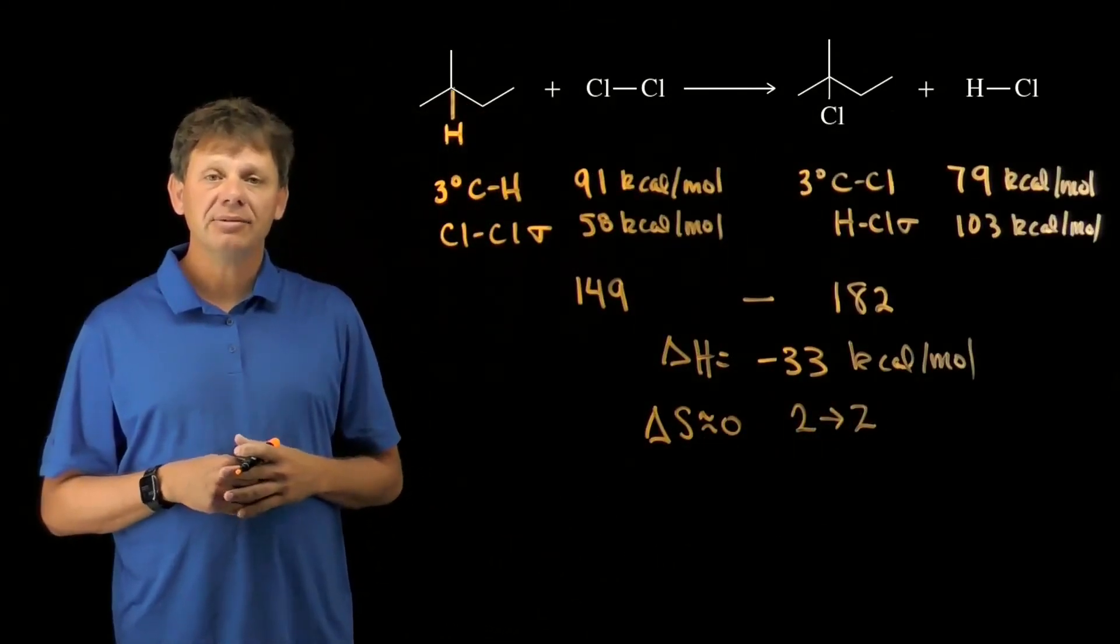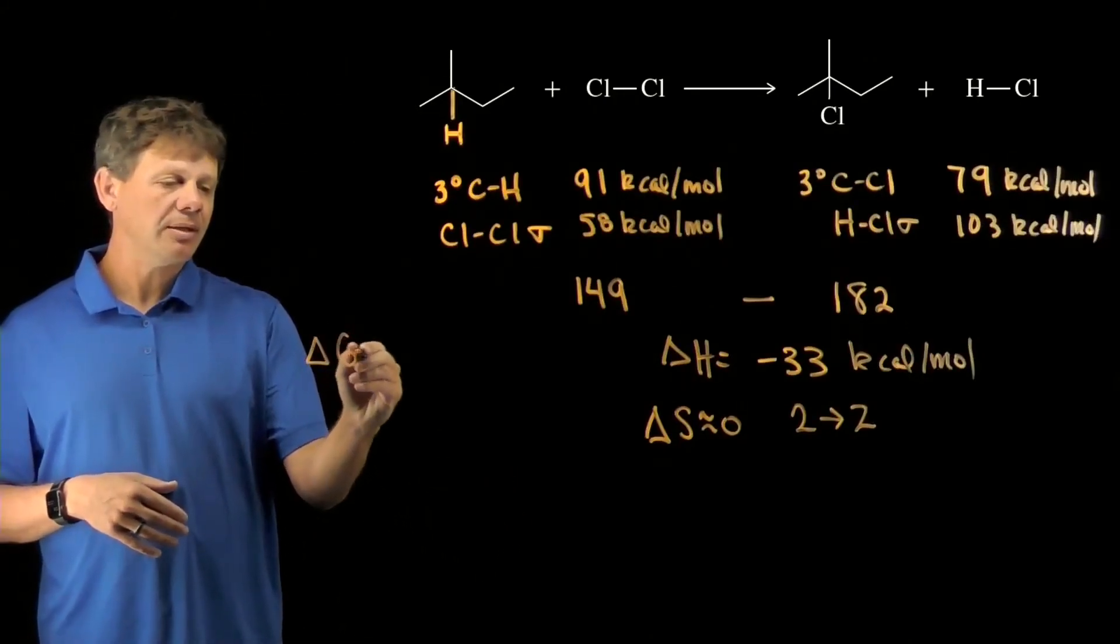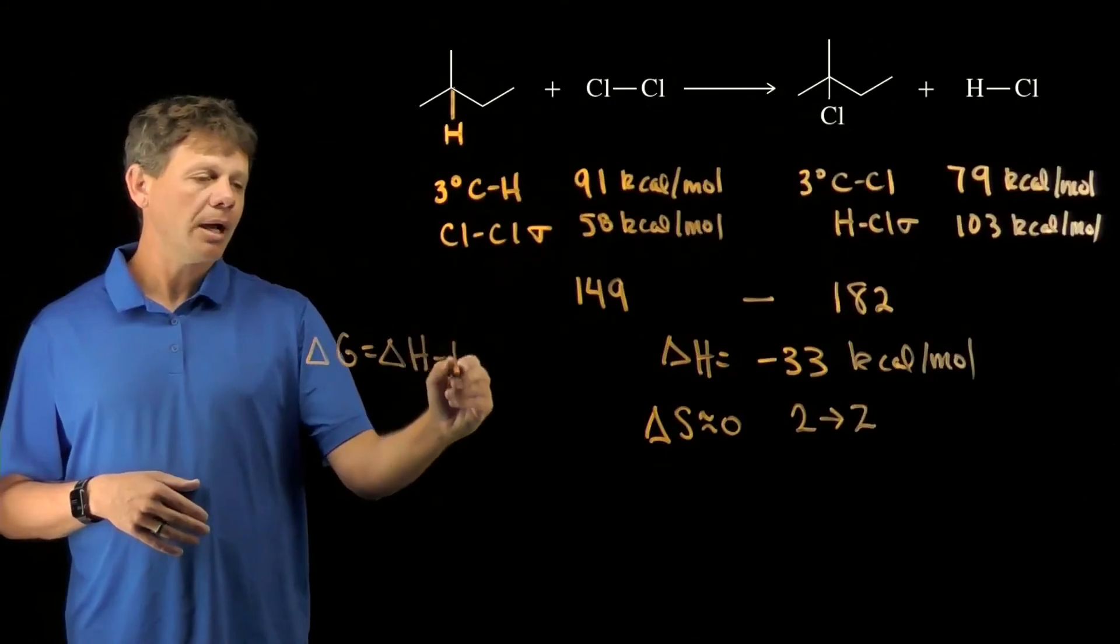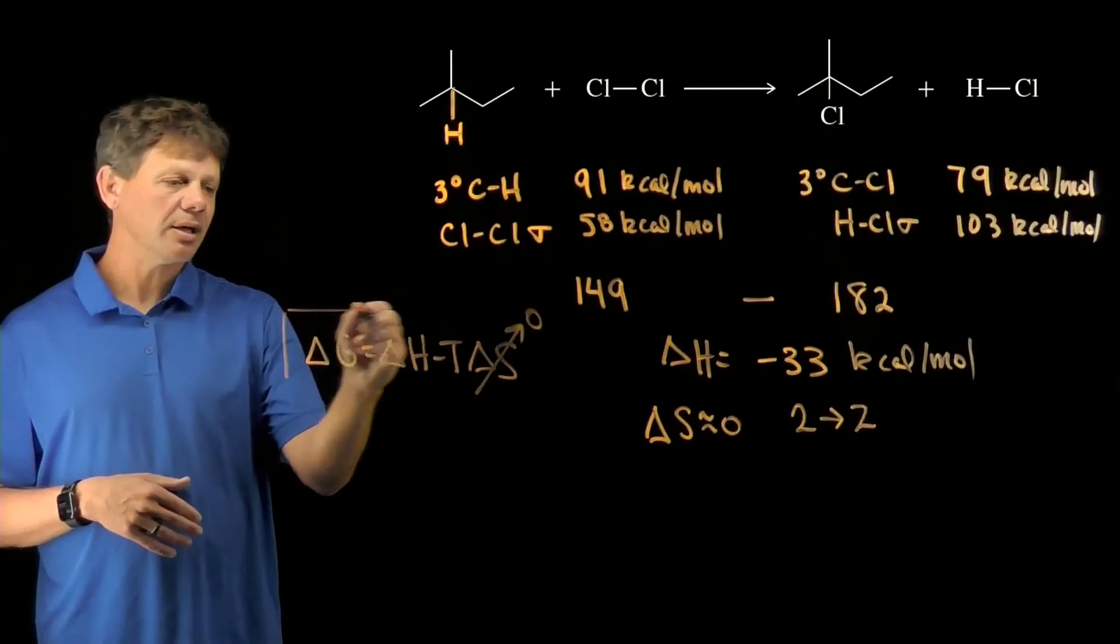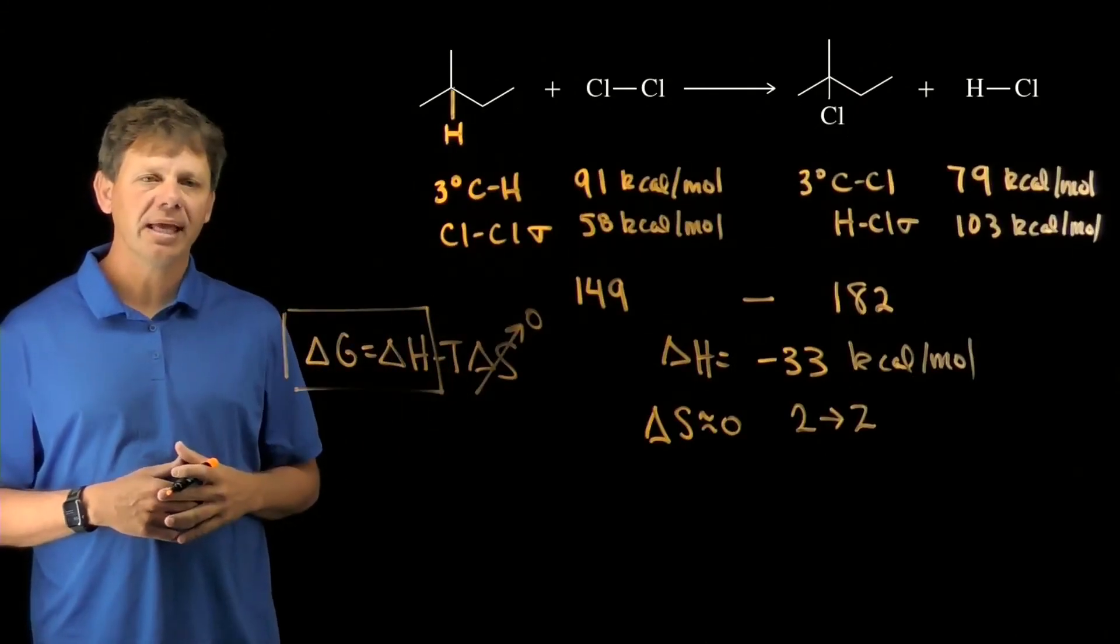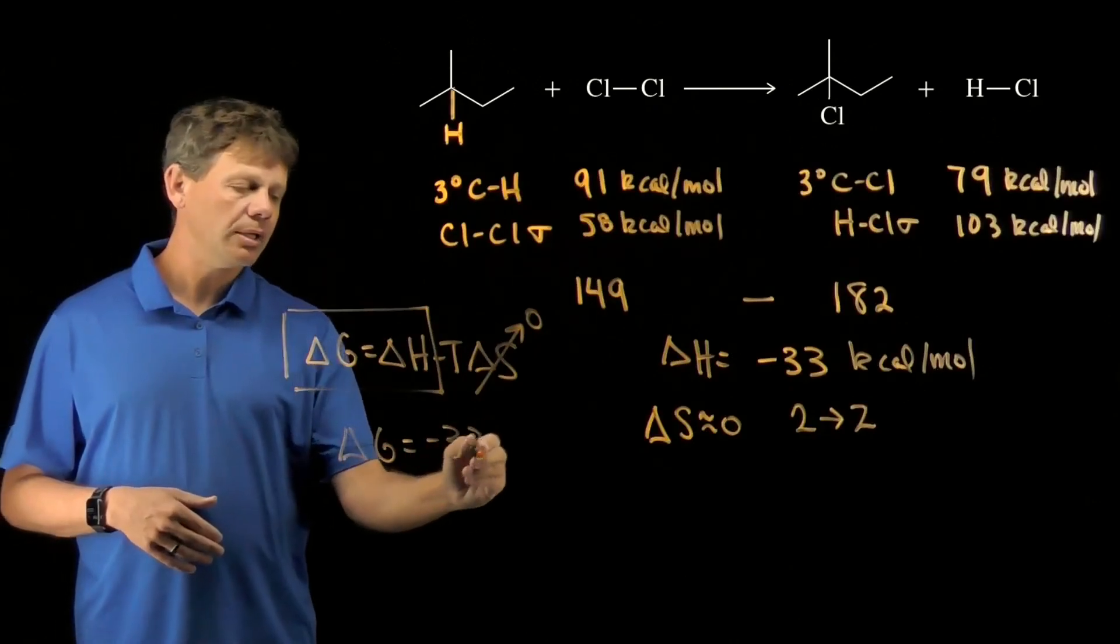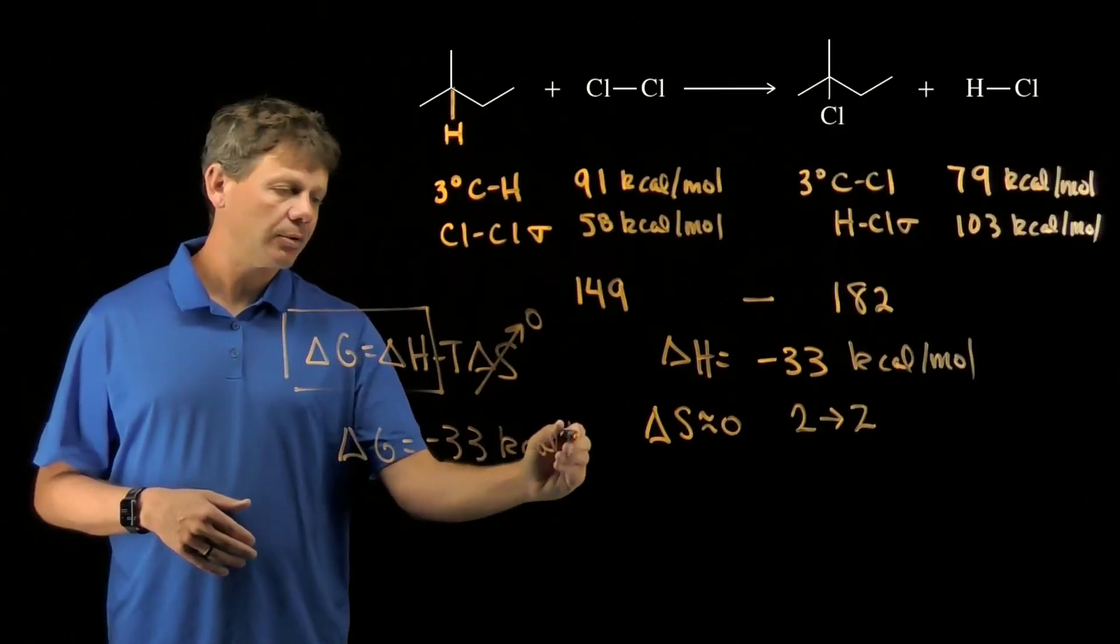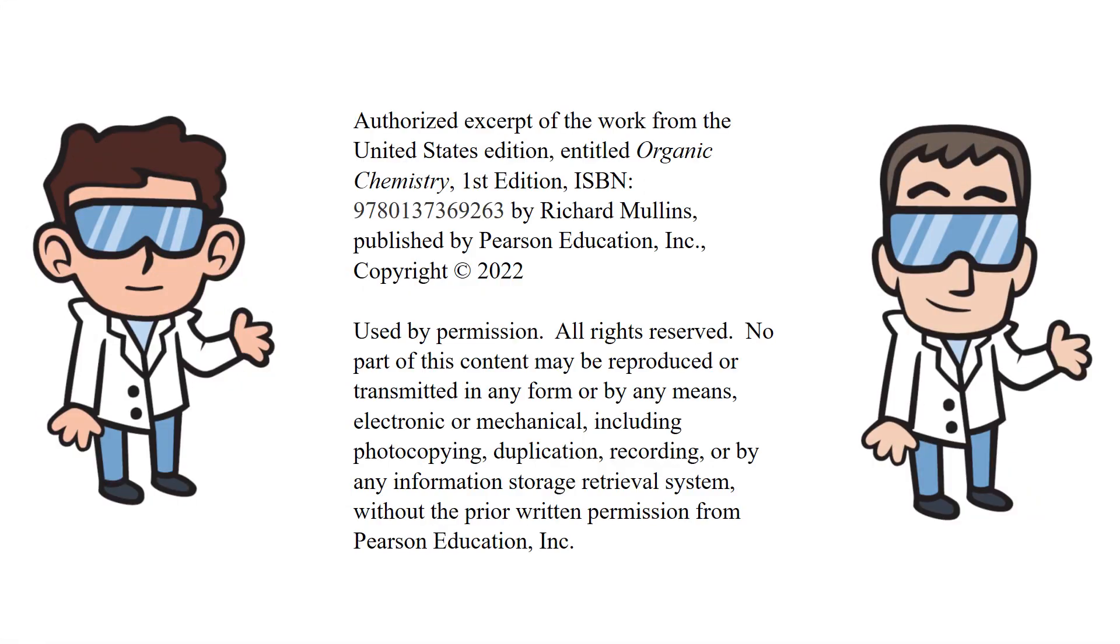This makes part three easy because we're going to calculate delta G. We know that delta G is equal to delta H minus T delta S. If this value is zero, then essentially delta G equals delta H, so delta G for this reaction is also negative 33 kilocalories per mole.